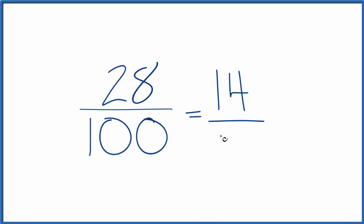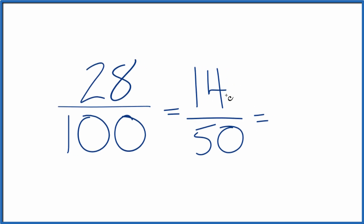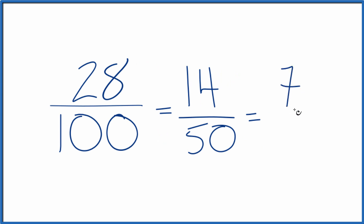So we've simplified it down to 14 over 50, but that's also even. Both of these are even numbers. So let's divide by 2 again. 14 divided by 2 is 7. 50 divided by 2 is 25.